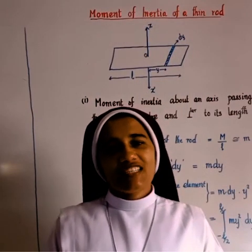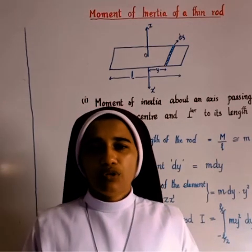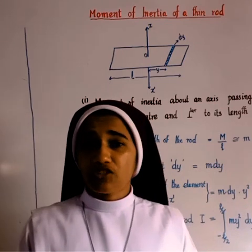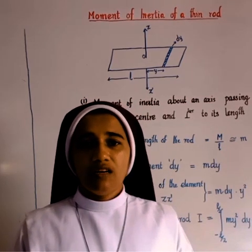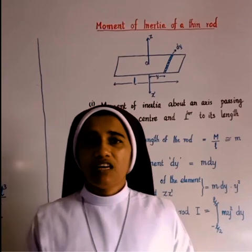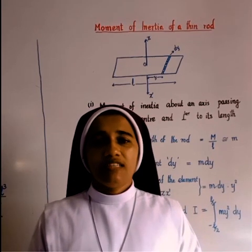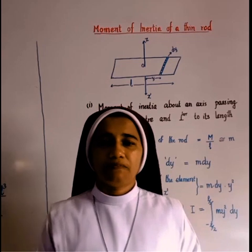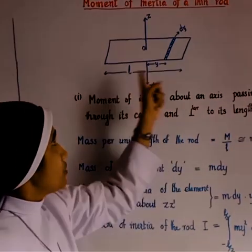Today we are going to use the parallel axis theorem and perpendicular axis theorem to find the moment of inertia of bodies with regular shapes like thin rod, circular ring, annular disc, sphere, and cylinder about different axes. We adopt a two-step procedure: first, obtain an expression for the moment of inertia of an element of the body about the given axis; second, integrate over the appropriate limits to cover the entire body. We will now find the moment of inertia of a thin rod of total length L.